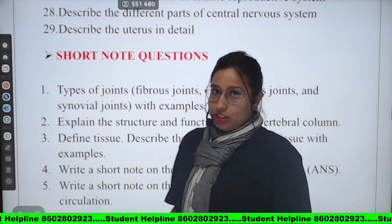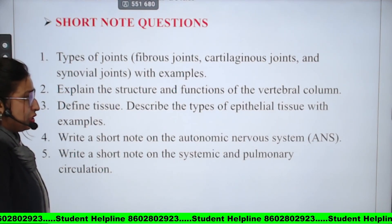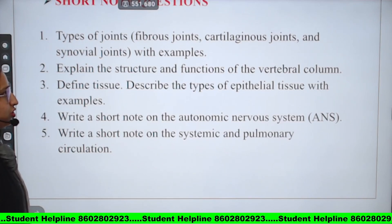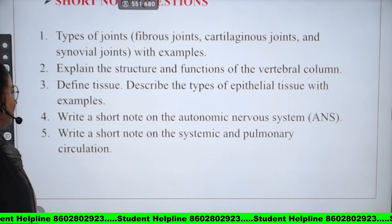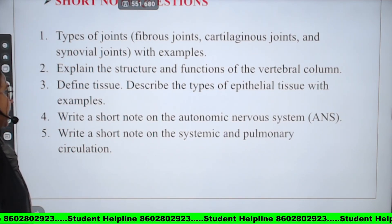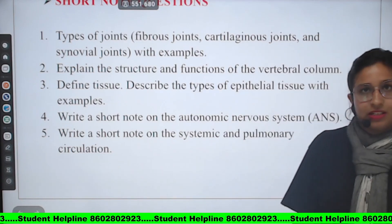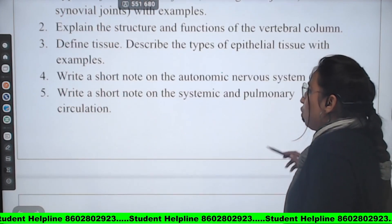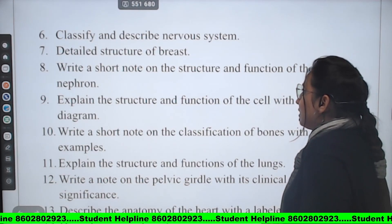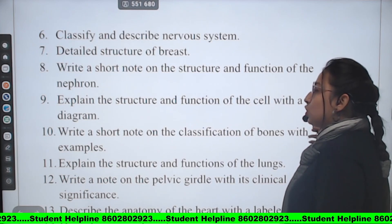Now let's discuss short note questions in the anatomy portion. First: Types of joints — fibrous joint, cartilaginous joint, and synovial joint with examples. Second: Explain the structure and function of the vertebral column. Third: Define tissue and describe the types of epithelial tissue with examples. Fourth: Write short notes on the autonomic nervous system (ANS). Fifth: Write short notes on systemic and pulmonary circulation. Sixth: Classify and describe the nervous system. Seventh: Describe the detailed structure of the breast.